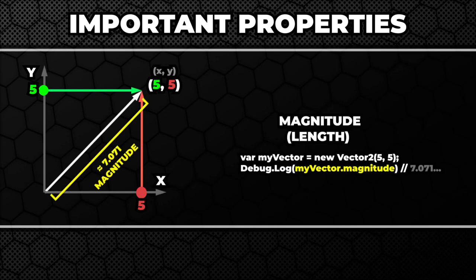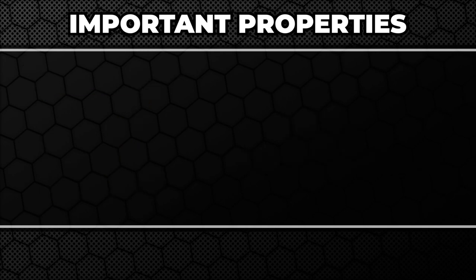Next useful information is the vector's magnitude, which as said at the beginning of the video is nothing more than the length of the vector. Then we have the normalized value of the vector. This one is a little bit more tricky.